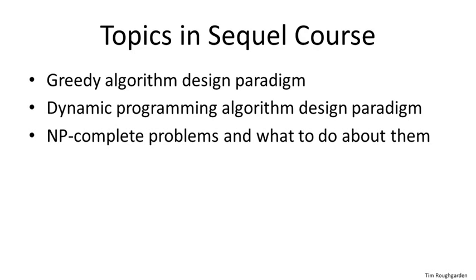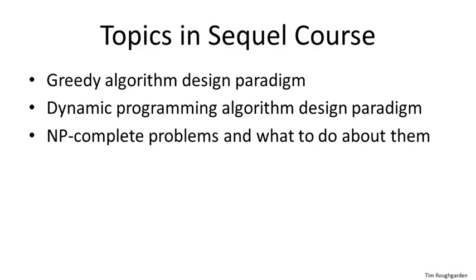The second part of the sequel course concerns NP-complete problems and what to do about them. NP-complete problems are problems that, assuming a famous mathematical conjecture called the P not equal to NP conjecture, cannot be solved by any computationally efficient algorithm. We'll discuss the theory of NP-completeness with a focus on what it means for you as an algorithm designer. We'll also talk about several ways to approach NP-complete problems, including fast algorithms that correctly solve special cases, fast heuristics with provable performance guarantees, and exponential time algorithms that are qualitatively faster than brute force search. Depending on demand, there might also be further courses on more advanced topics.